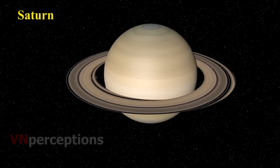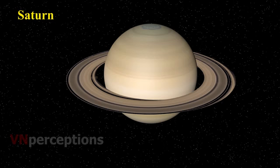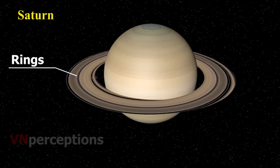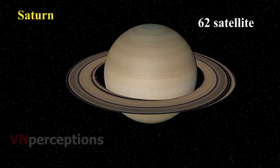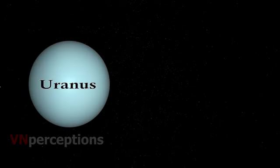Then comes Saturn. Saturn is the sixth planet from the sun and second largest in the solar system after Jupiter. It appears yellowish in color. What makes it unique in the solar system is its beautiful rings. These rings are not visible with the naked eye — you can observe them with a small telescope. Saturn also has a large number of satellites, that is 62 satellites. One interesting thing about Saturn is that it is the least dense among all the planets. Its density is less than that of water.